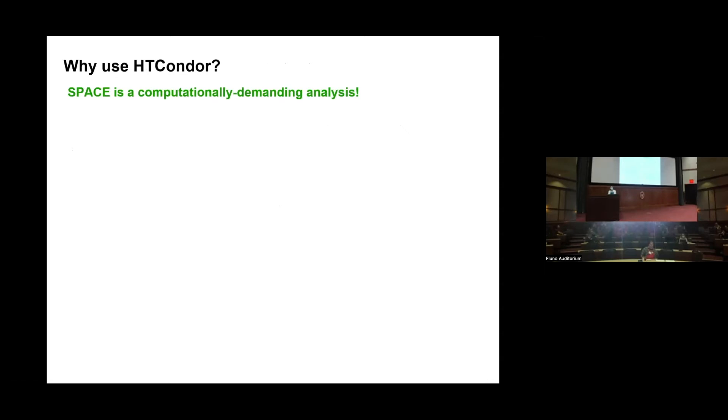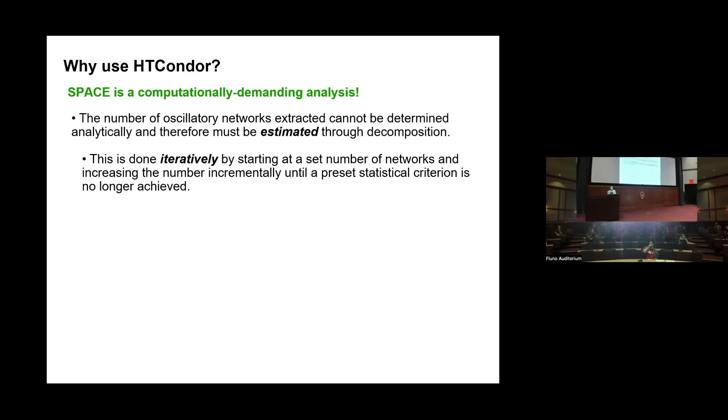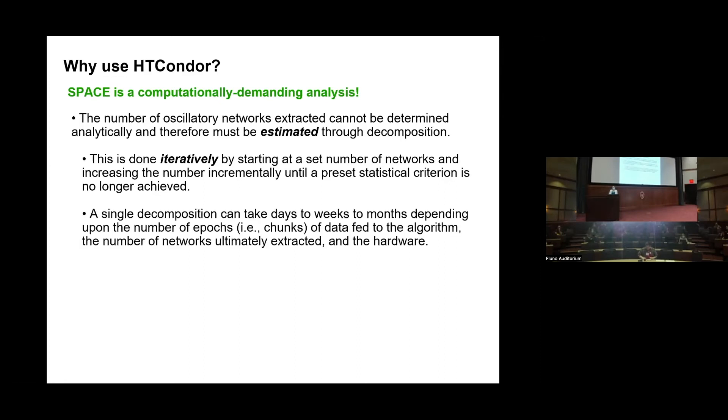One likely reason why this approach has not taken off is because it's a very computationally demanding analysis. That's where high throughput came in for us. The procedure comprises a parallel factor analysis-based signal decomposition method, but the number of networks that can be decomposed cannot be determined analytically and must be estimated through decomposition. To find the optimal decomposition, we have to do this iteratively. We set a statistical criterion, start at a set number of networks, and keep decomposing, increasing the number of networks incrementally until we no longer achieve our criterion.